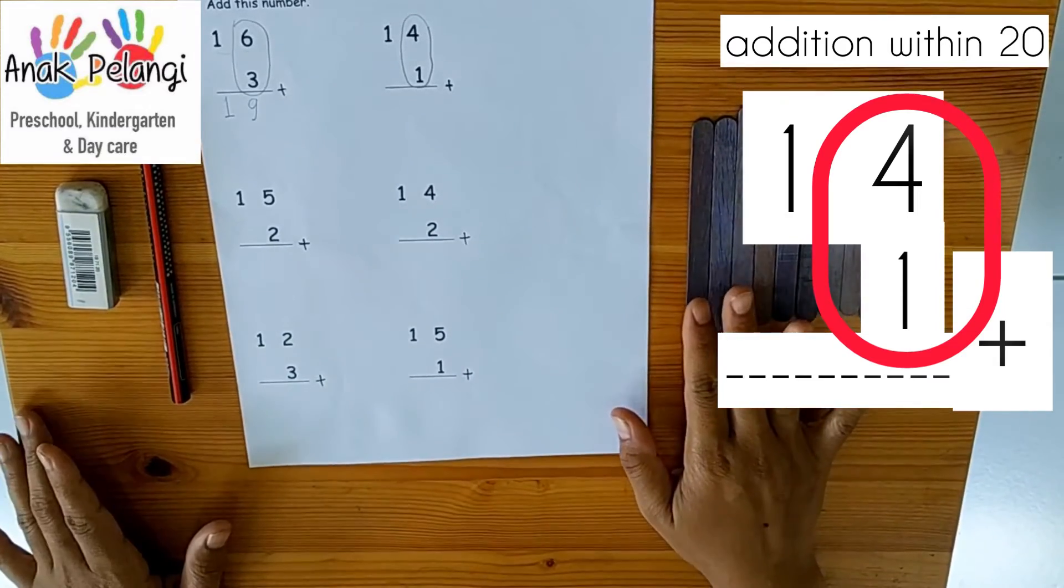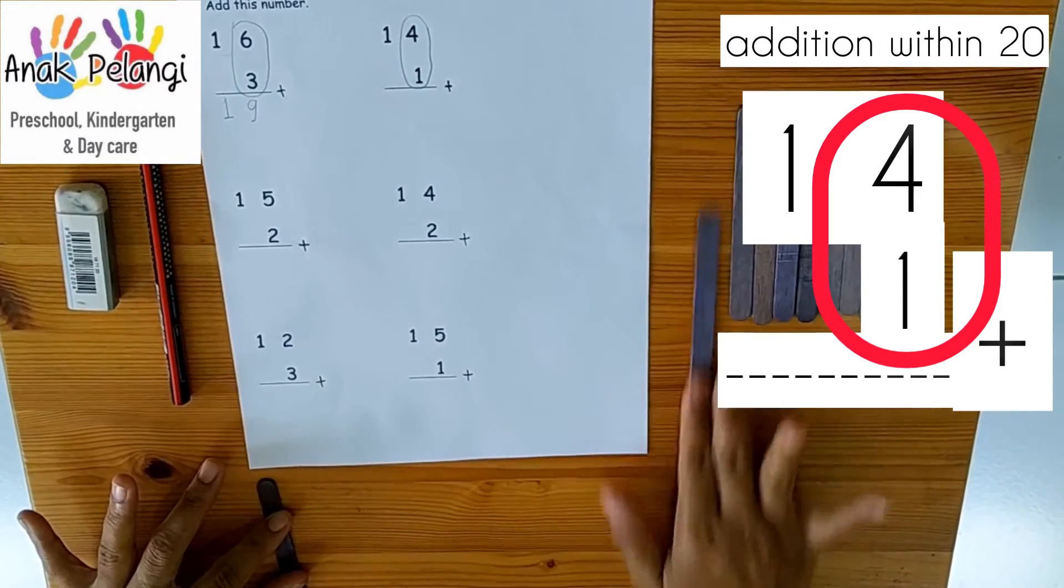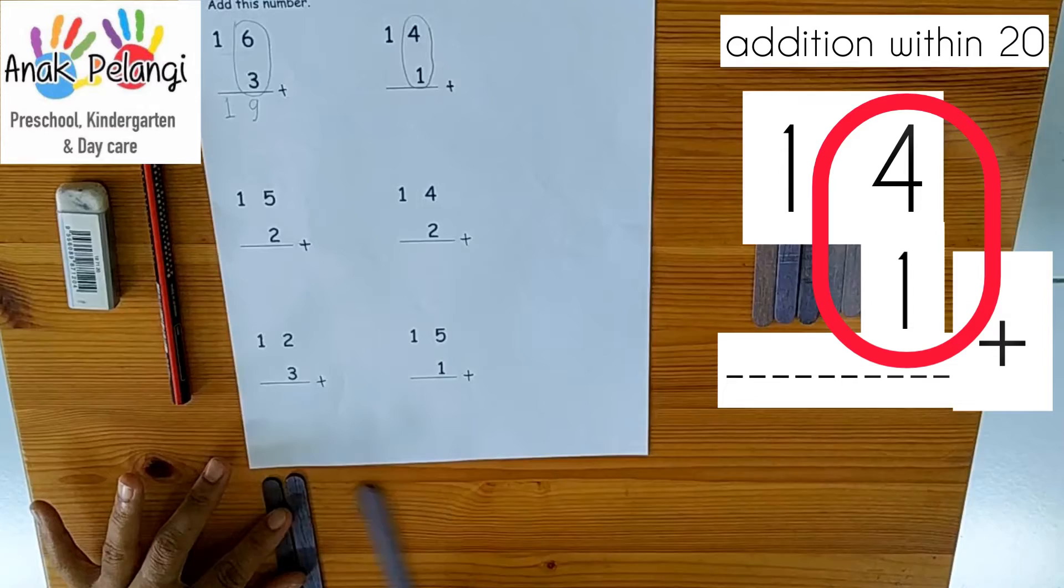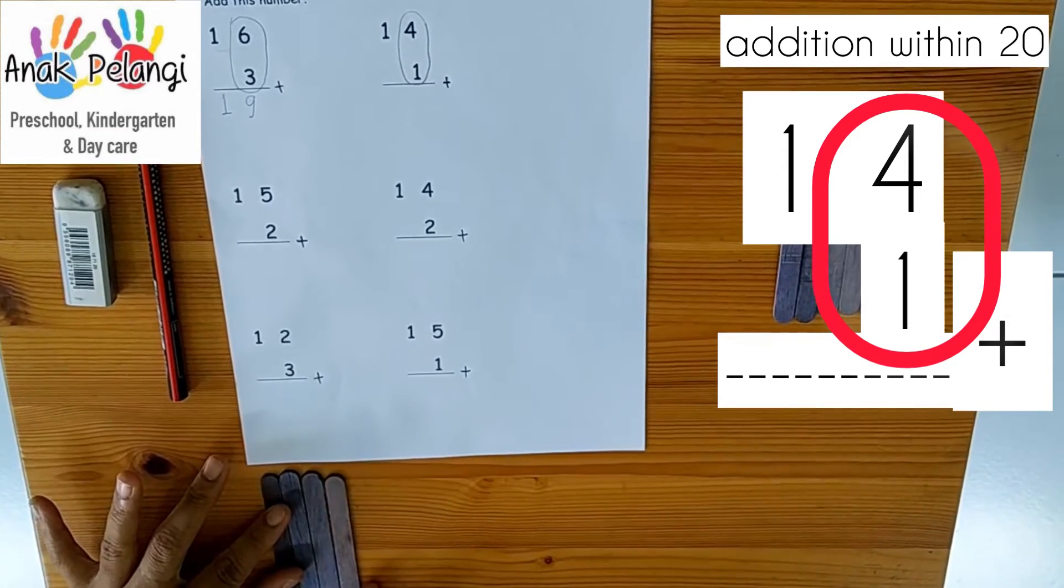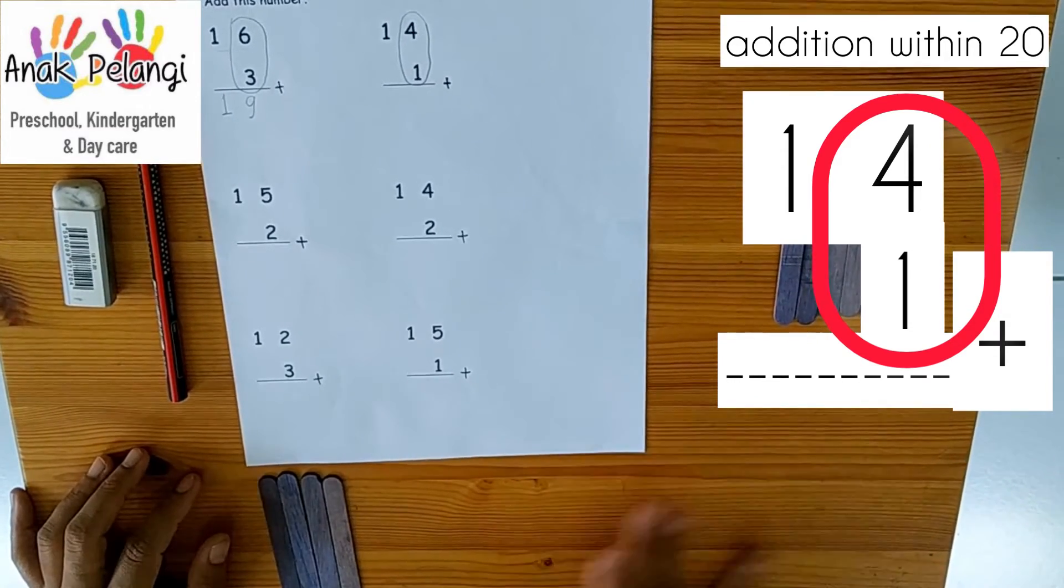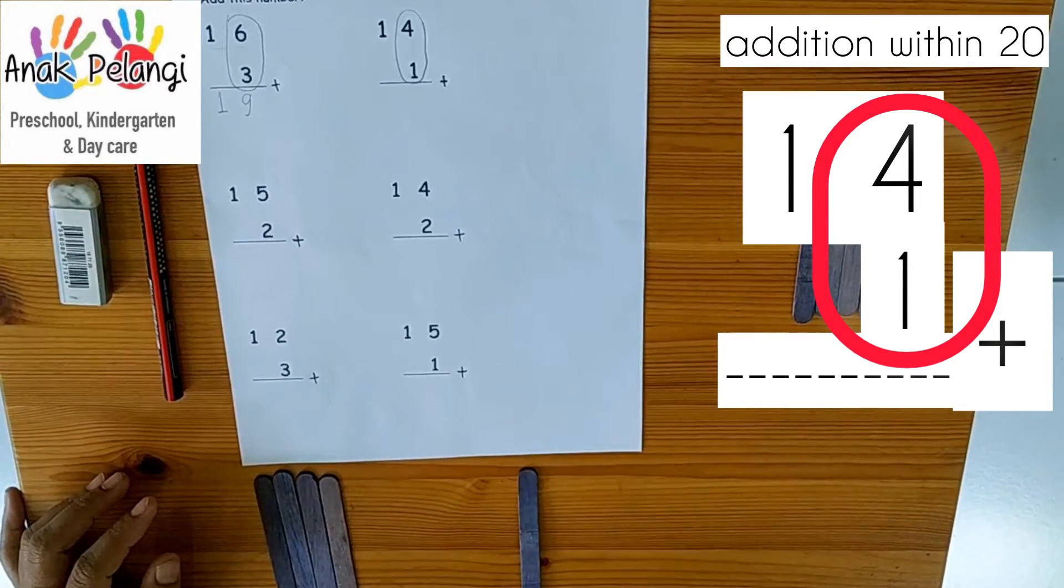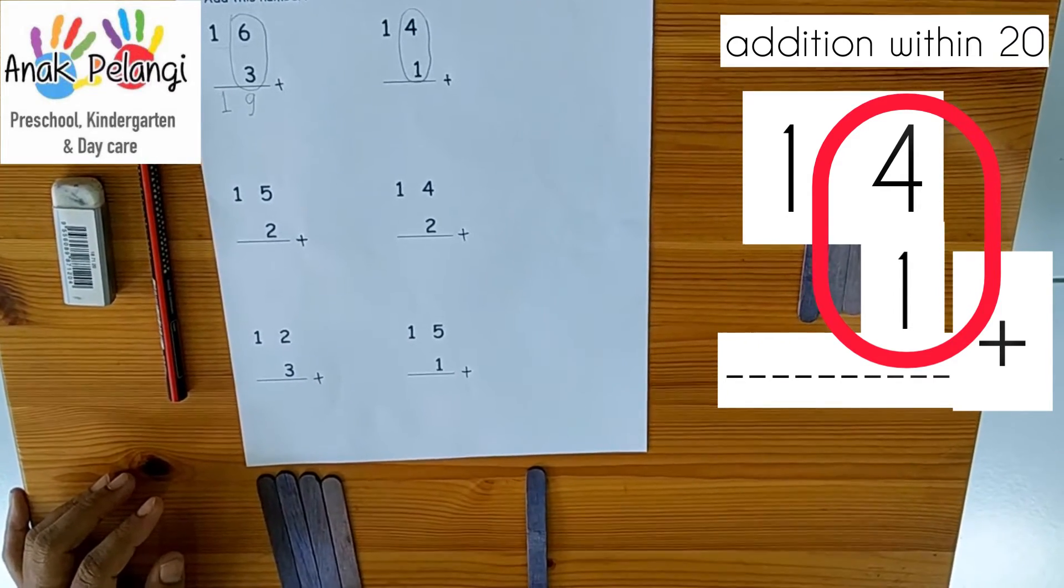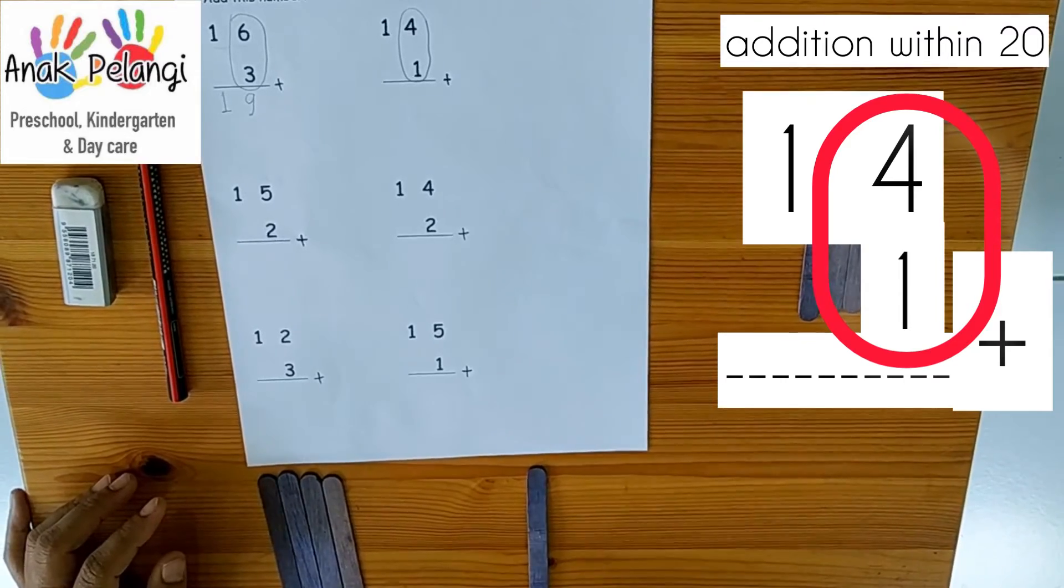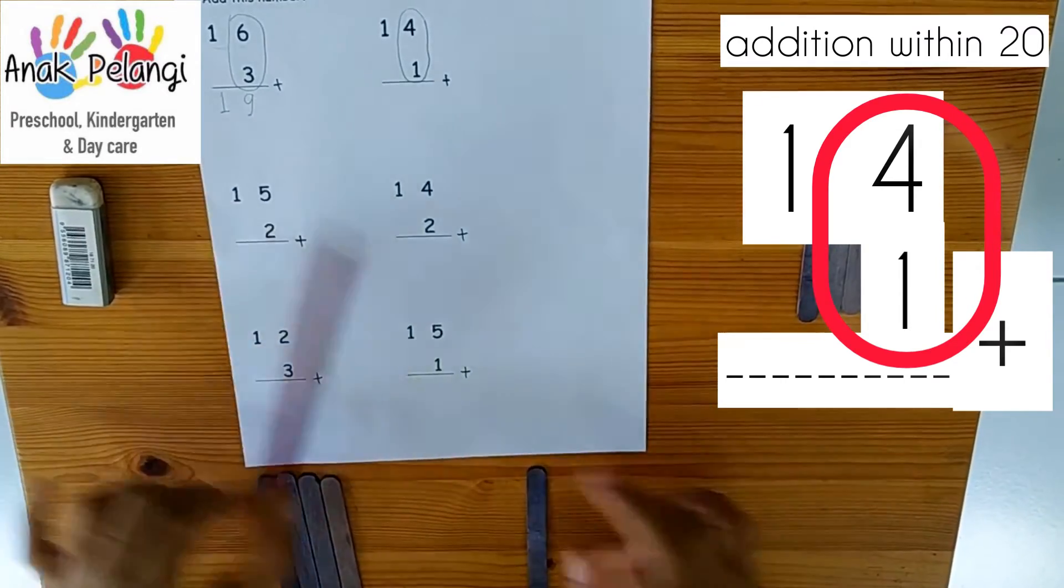4 plus 1. 1, 2, 3, 4 plus 1. 1, 2, 3, 4, 5. It's 5.